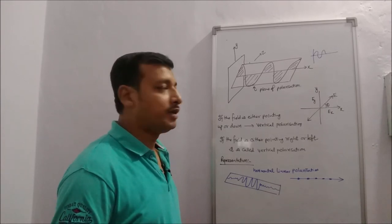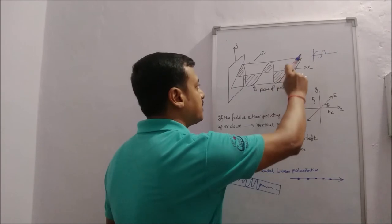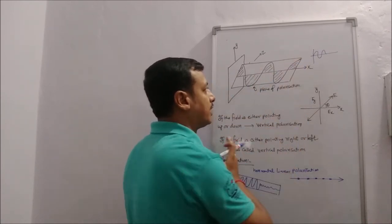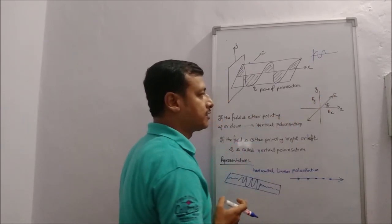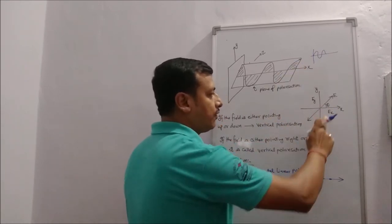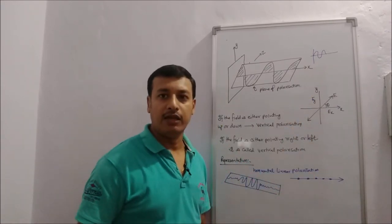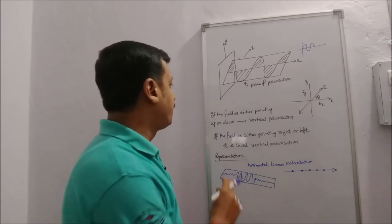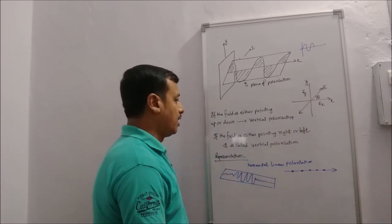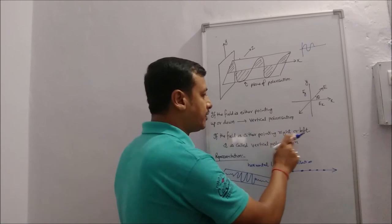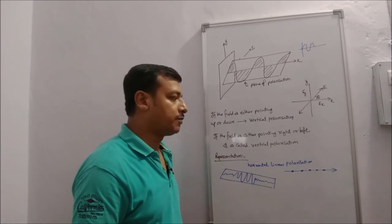The plane polarized light moves forward in one plane and its magnitude changes sinusoidally — the sine wave changes with respect to time. If E is the electric vector making an angle theta with the x-axis, we can take its x-component as Ex and y-component as Ey. If the field points up or down vertically, it is called vertical polarization; if the field points right or left, it is called horizontal polarization.